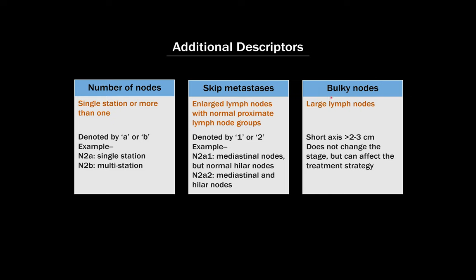Finally, there's the term bulky lymph nodes. The actual definition differs from one source to the next, but it really just means that the lymph nodes are significantly enlarged, not just a little bit enlarged. Some places say bulky is greater than two centimeters in short axis, some say greater than three centimeters in short axis. If you have bulky lymph nodes, it doesn't really change the stage, but it can change the management.